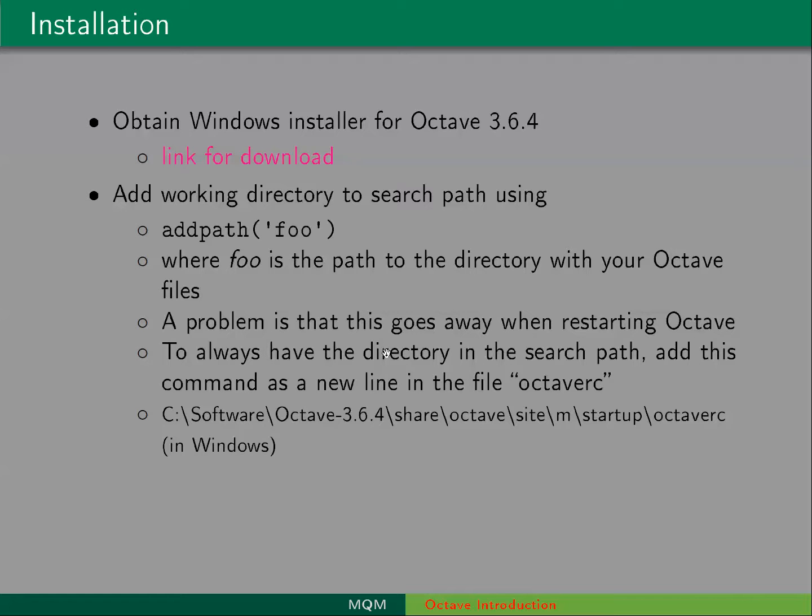This details the process for making that path persistent, so you don't have to keep calling add path every time you start Octave. You can just edit this file, Octave RC, which is located here. What you do is just add this command to that file where you replace foo with the path to your directory. And here's another link to documentation for Octave. There's also the help function inside if you want help with a built-in function.